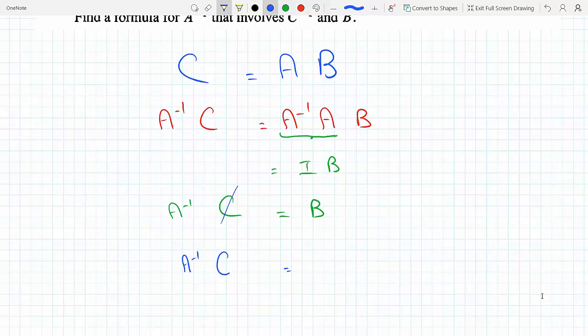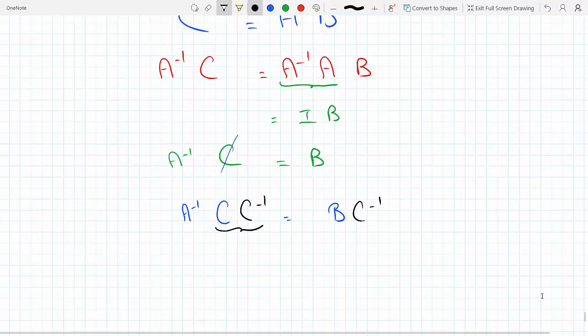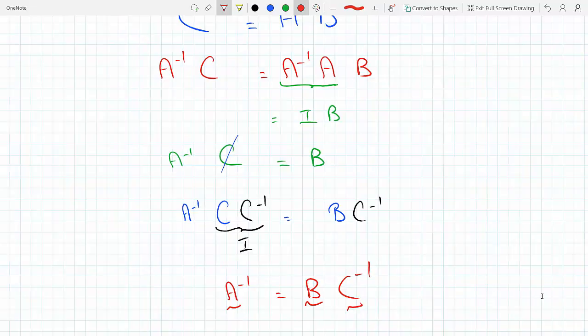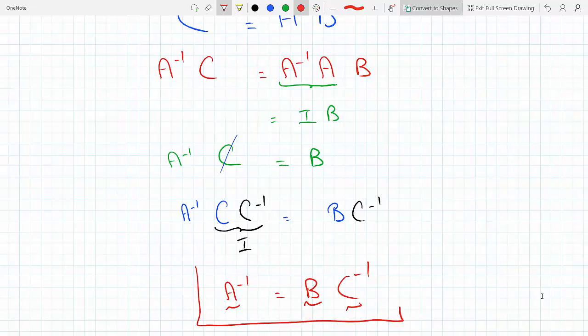A inverse C, this is just the above one, and I could multiply both of these by C inverse. This will make this the identity matrix times A inverse, which will just be A inverse equals matrix B times matrix C inverse. So this is the final result. Straightforward.